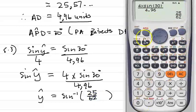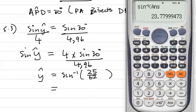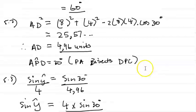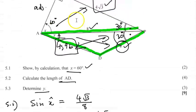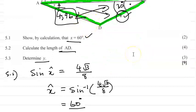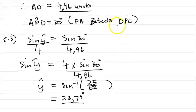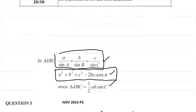Therefore y equals sine inverse of that value, giving approximately 23.78 degrees. This question was great because we dealt with a right angle triangle using SOH CAH TOA, then the cosine rule requiring two sides and an included angle, and then the sine rule. We covered all the main rules except the area rule, which I'll cover in the next video. Subscribe to my channel JLMaths and check out jlmaths.com.